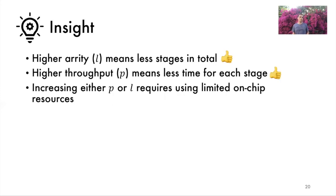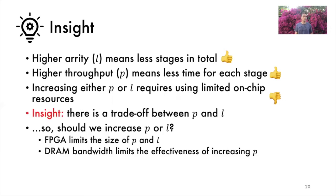However, increasing either P or L requires using limited on-chip resources and that's bad. So this presents a trade-off. Since we cannot increase both P and L, which one is more important? Well, it depends. Different FPGA and DRAM configurations have different optimal P and L values. There are two reasons for this. First, as mentioned, the specific FPGA we use will limit how big P and L can be. And second, it's not worth increasing tree throughput P beyond the DRAM bandwidth.